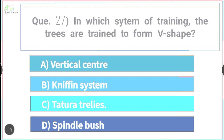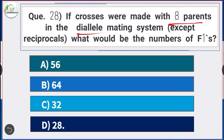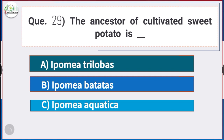Question number 28: If crosses were made with eight parents in a diallel mating system except reciprocals, what would be the number of F1s? Answer is option B — 28. The number of F1s with eight parents in diallel mating system would be 28.